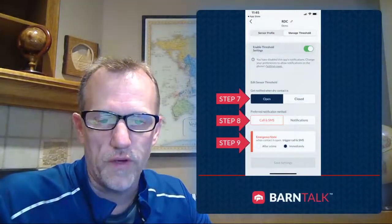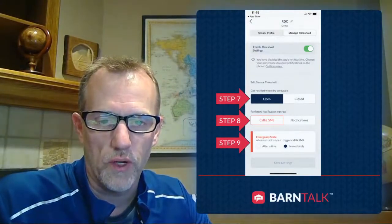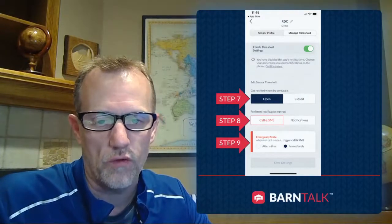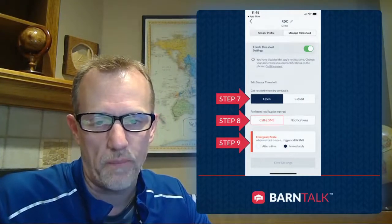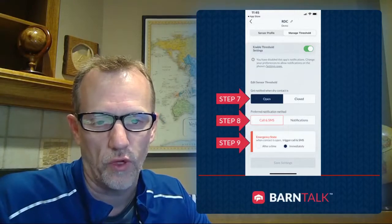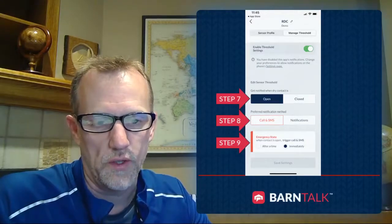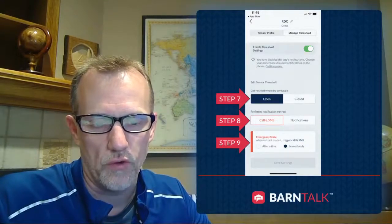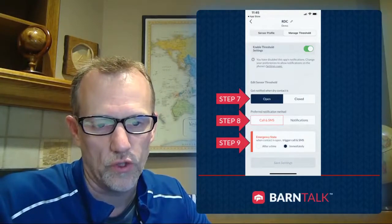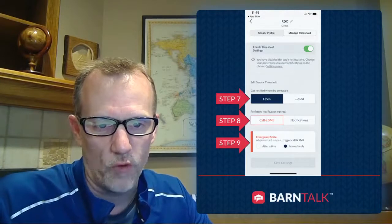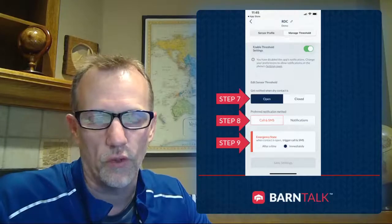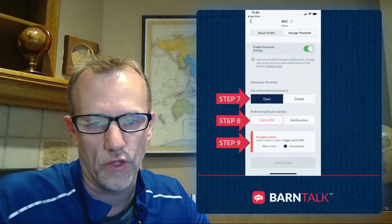We have three different settings available for the dry contact alerts. Step 7 is when you want to get notified. This tells the app to notify you when the dry contact state changes from closed to open. If you click on closed, you will be notified when the circuit wired into the dry contact goes closed. If you have a normally open circuit, you want to be notified when it closes; if you're using a normally closed circuit, you want to be notified when that circuit opens.